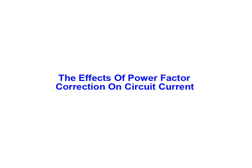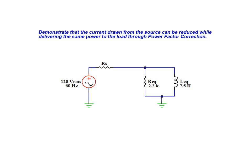In this animation we will be examining the effects of power factor correction on circuit current. In this example we will demonstrate that the current drawn from the source can be reduced while delivering the same real power to the load by way of power factor correction.